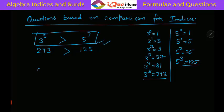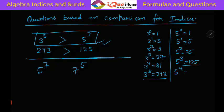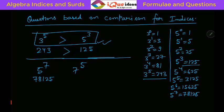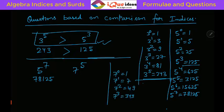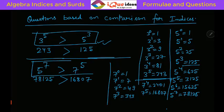Similarly, which one is greater: 5 raised to 7 or 7 raised to 5? For powers of 5: 5 cubed is 125, 5 to the 4th is 625, and 5 raised to 7 is 78,125. For powers of 7: 7 raised to 4 is 2401, and 7 raised to 5 is 16,807. Clearly 78,000 is greater than 16,000, so 5 raised to 7 is greater than 7 raised to 5.